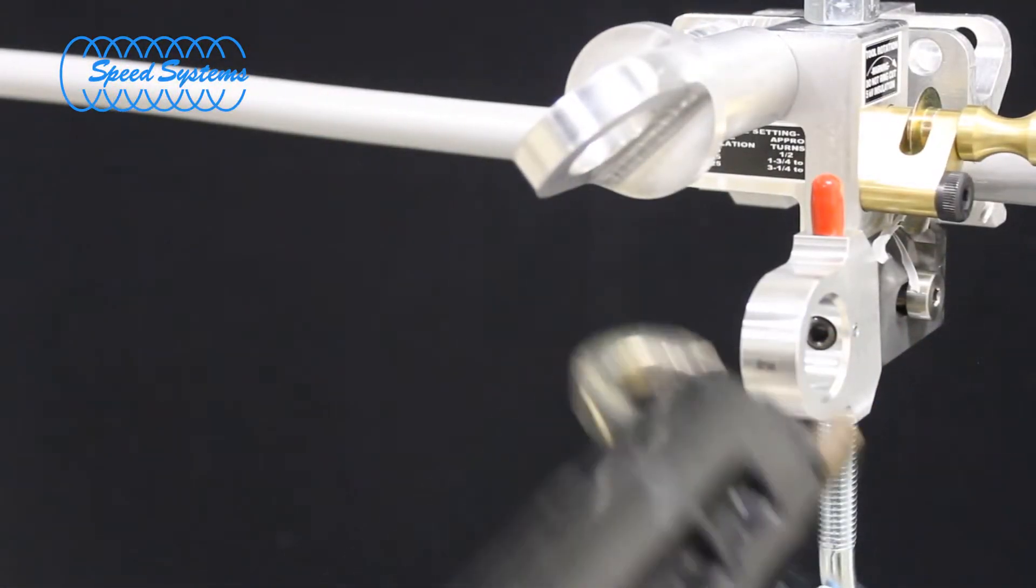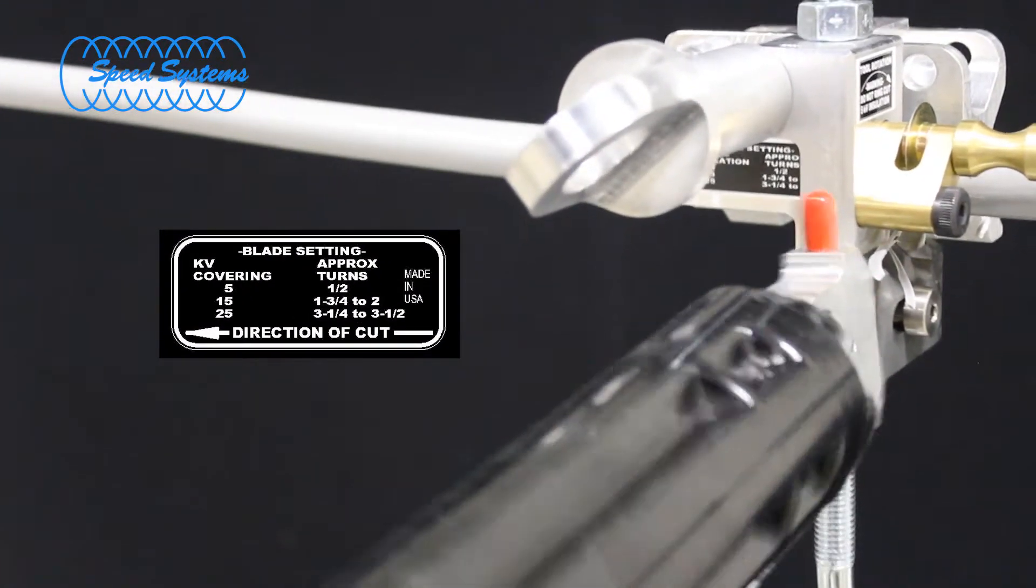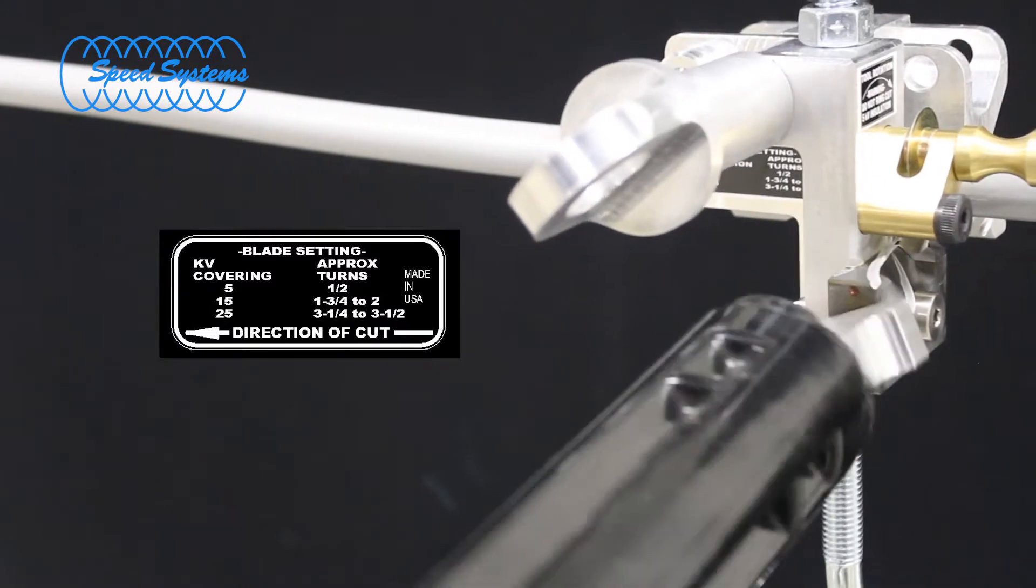Move the stick to the blade adjuster eye and set the blade depth. Use the chart on the nameplate as a guide to the approximate blade depth setting based on the kV rating of the cable.